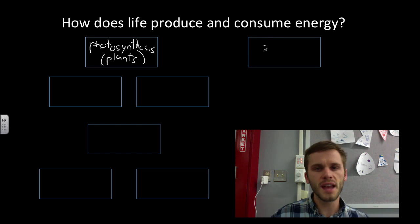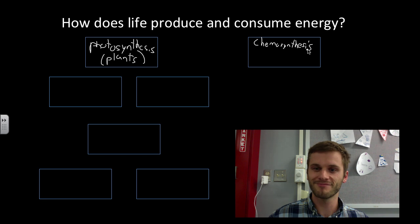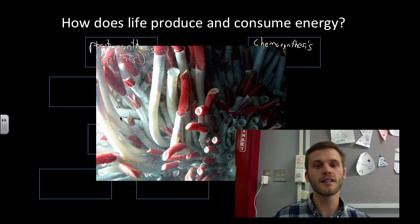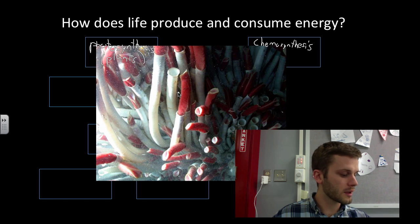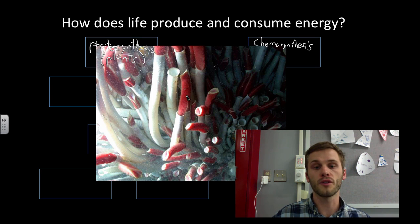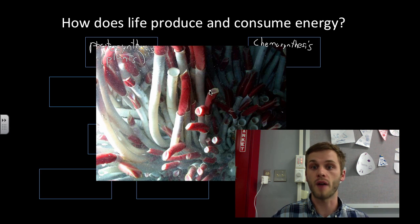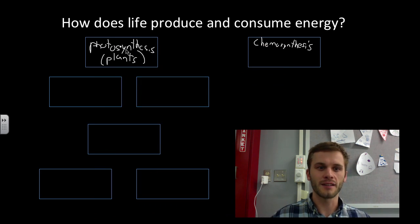Chemosynthesis is when you take chemical energy and convert that into energy that life can use. A great example are these guys right here, big giant tube worms that live by hydrothermal vents. They're way deep in the ocean and they take the energy from these thermal vents and convert it to energy that it can use so it can live, and other creatures feed off of these. Really cool.